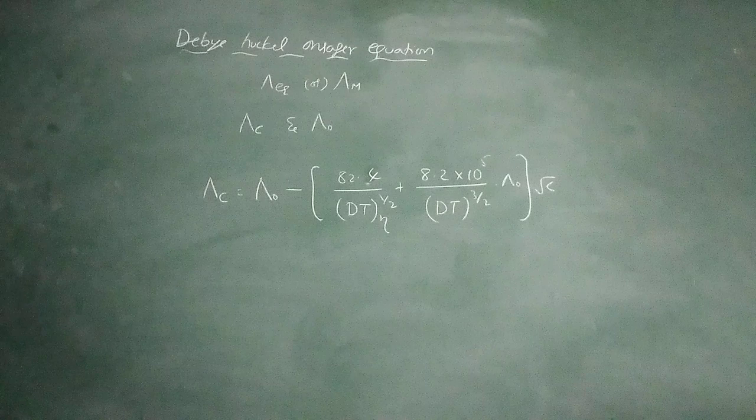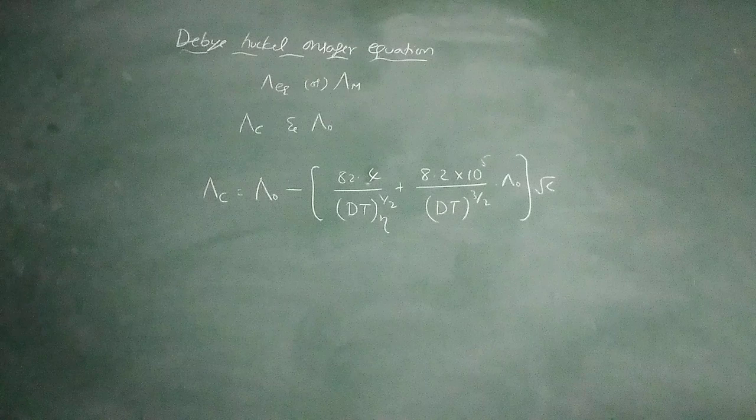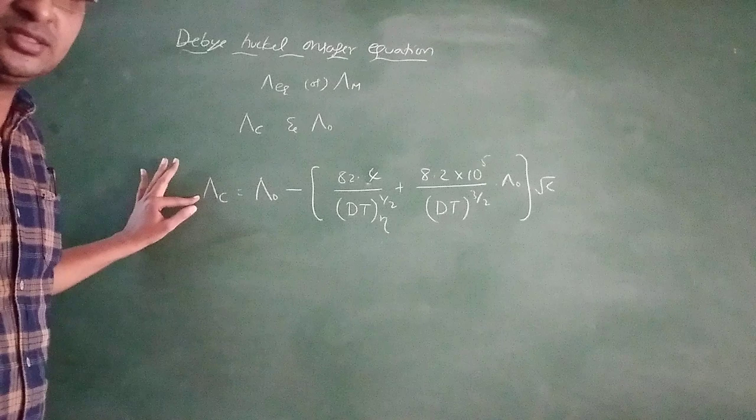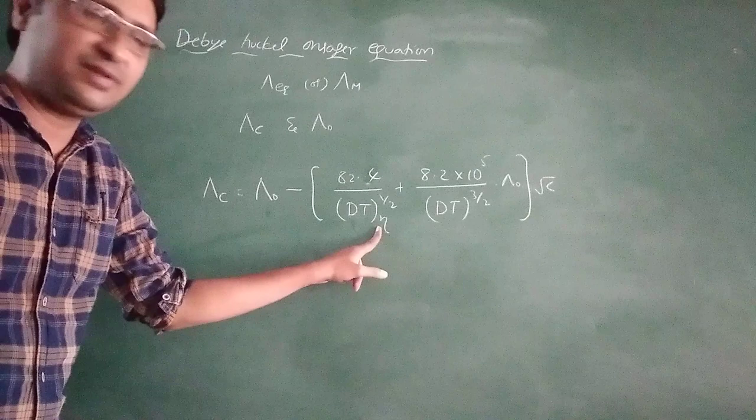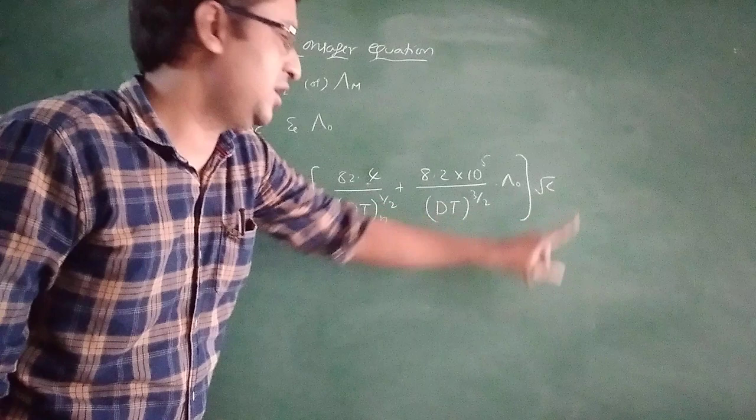Lambda C is the conductance at certain concentration C. Lambda 0 is conductance at infinite dilution. D is the dielectric constant, T is temperature in Kelvin, eta is the viscosity of solvent, and C is the concentration of the electrolyte.